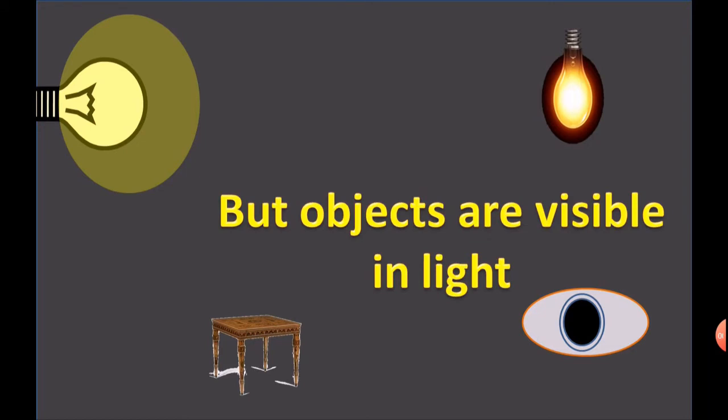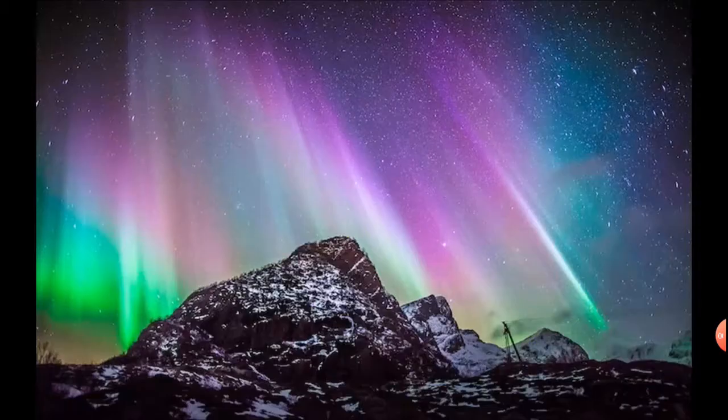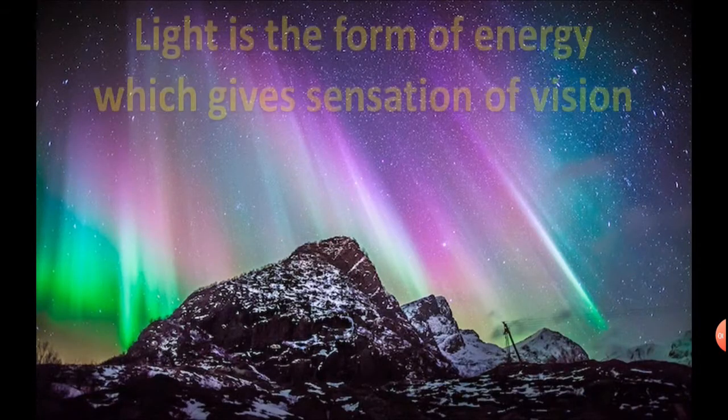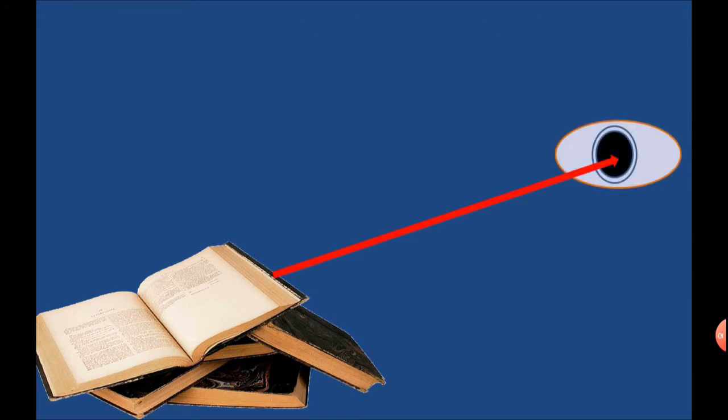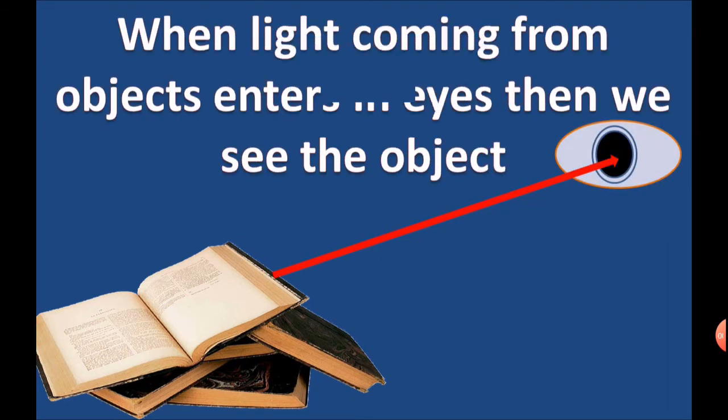But objects are visible in light. Therefore, light enables us to see objects. Light is the form of energy which gives sensation of vision. When light coming from objects enters in eyes, then we see the object.